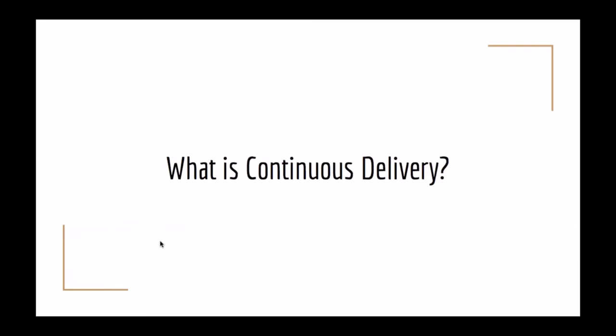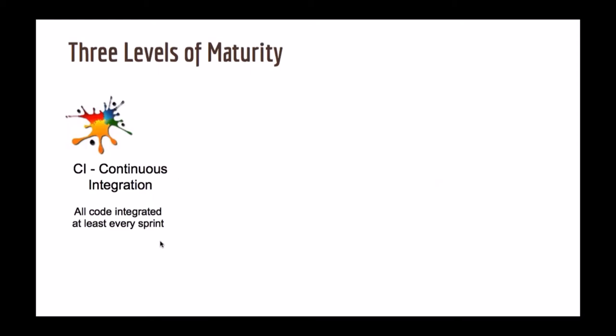If I have to give you a parallel, continuous delivery is like the second bus stop in a big journey. Your entire journey consists of three stops, and the second bus stop is continuous delivery. These bus stops are nothing but three levels of maturity in which you iteratively deliver value to the customer in a software development concept. The first stop is called continuous integration.